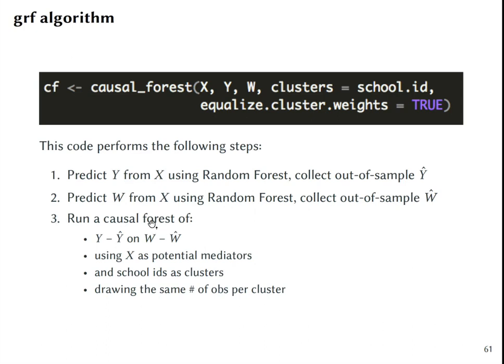And then the third step, it runs a causal forest of prediction errors for Y on prediction errors for W, using these covariates as potential mediators. Then we also say that we have clusters by supplying school IDs, and we ask to equalize cluster weights, meaning that all schools will have exactly the same weight independent of their actual size and number of pupils by drawing the same number of observations per cluster.